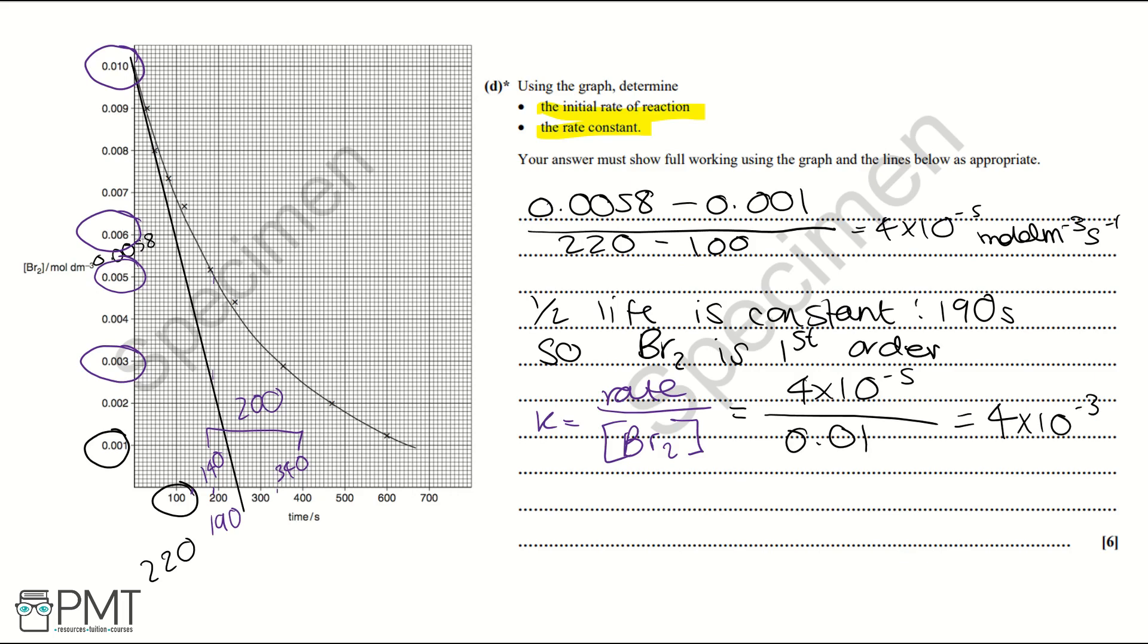Now we need to work out the units. So we have rate measured in moles per decimetre cubed per second. And we're dividing by concentration of bromine, which is measured in moles per decimetre cubed. That means we can cancel out the moles per decimetre cubed. And that makes our units seconds to the minus 1.